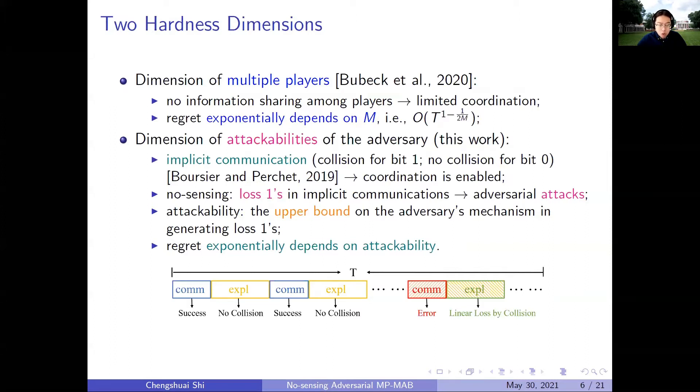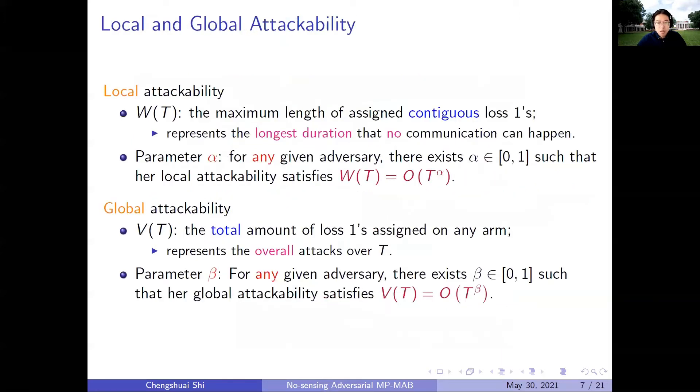If such an attack succeeds, it will result in catastrophic influence on later exploration or exploitation. Namely, if one implicit communication fails, the following exploration or exploitation may suffer a linear loss. So we study this problem from the perspective of the adversary's mechanism in generating these loss 1s. In other words, their mechanism of attacking. Especially, we involve one new concept of attackability, which represents an upper bound of such mechanisms. In particular, we propose two kinds of attackability. The first one is called the local attackability.